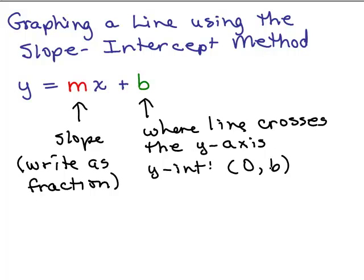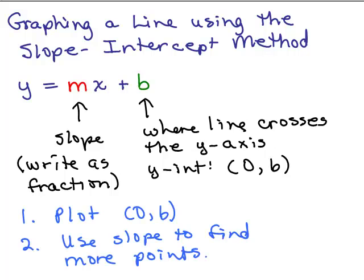Our steps will be to first plot a point, which will be the y-intercept, and then to use the slope to get another point on the line. We'll plot the point (0, b), then use the slope written as a fraction to find one or more points. Let's go over an example.